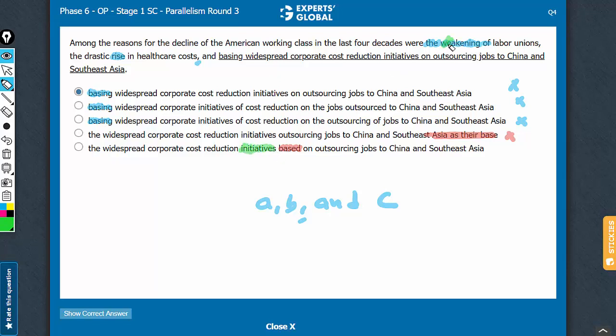The list is of weakening of something, rise in something, and certain initiatives based on outsourcing jobs to somewhere. Makes complete sense. E is the correct answer choice.